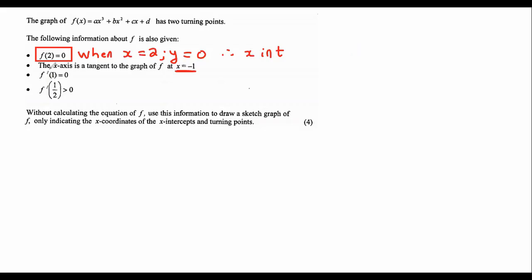This stands for first derivative. And what does the first derivative stand for again? The gradient. And so they're telling us that when x is 1, the gradient is equal to 0.